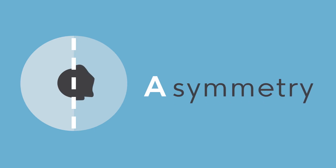A stands for asymmetry. This means that one half of the mole doesn't look like the other half, which suggests a bit of uncontrolled growth — often a sign of a tumour or cancer.